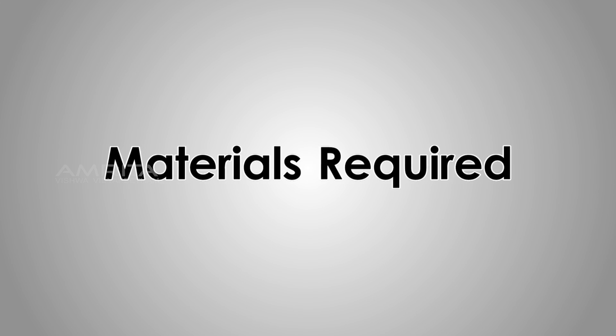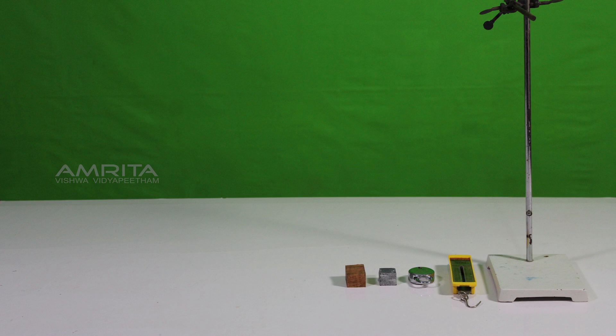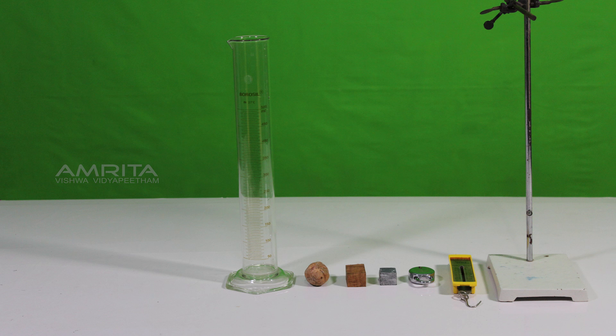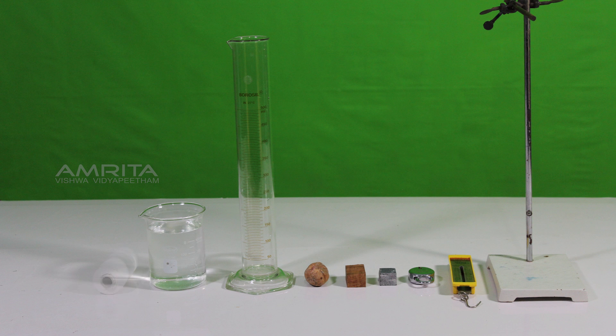Materials Required: Iron stand, spring balance, lock, cuboid, wooden block, stone, measuring cylinder, a beaker containing water, thread, and scissors.